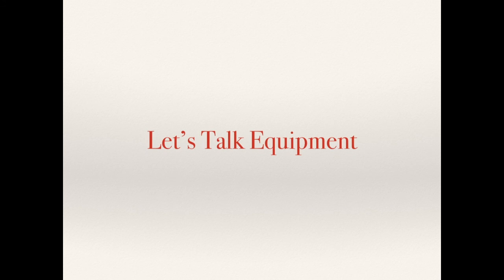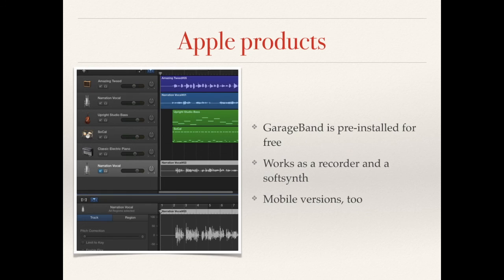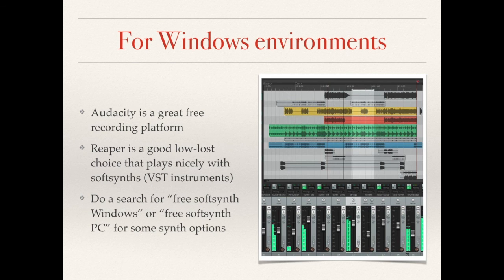So, let's talk equipment. For the purposes of this tutorial, we're going to work with a minimum of equipment to make this music. If you have an Apple computer product, you already have GarageBand installed for free, which can record your work and also has some soft synth functionality built in. If you're on a PC, you can use the free recording software Audacity to record your work, but you'll need to find a free soft synth to use. If you just Google 'free soft synth Windows' or 'free soft synth PC', you'll find some options to play with.